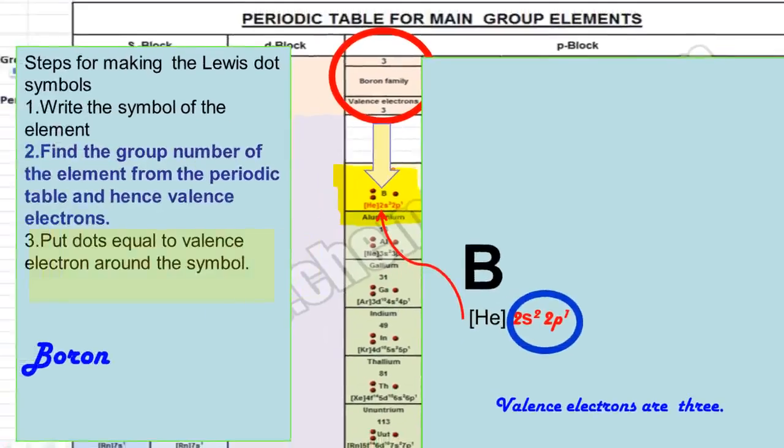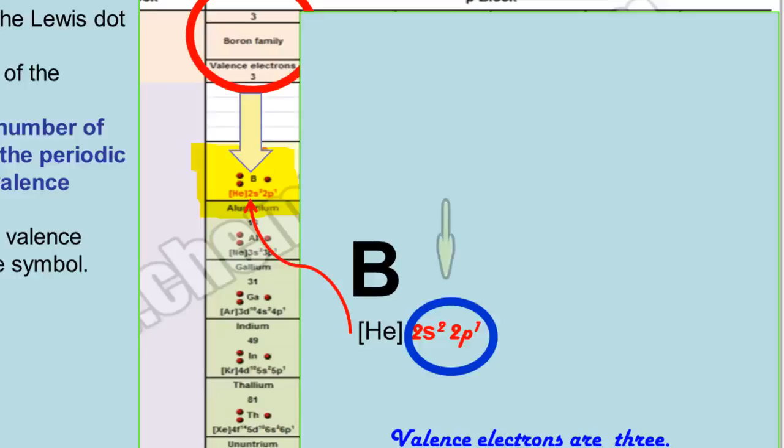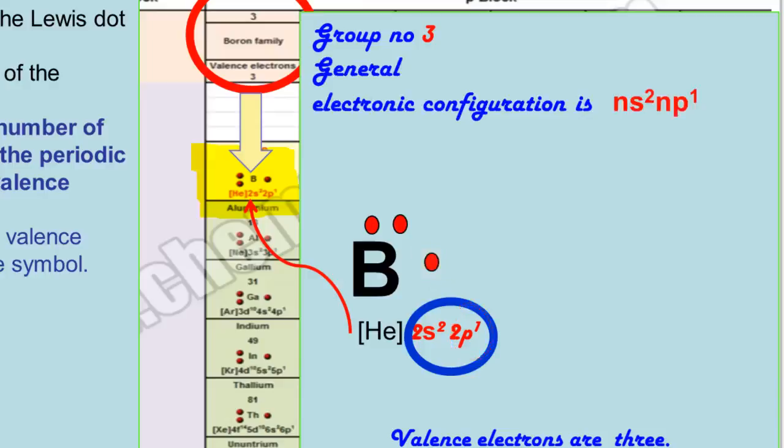Next step is to put dots equal to valence electrons around the symbol of the element. Boron has 3 valence electrons. 2 electrons are present in 2s orbital as a pair and 1 is present as unpaired electron. So we are going to place 2 dots as a pair representing 2s electrons, 1 dot as a single electron of the 2p orbital. Group 3 elements, they all have general electronic configuration of ns2 np1, their valence electrons are 3.